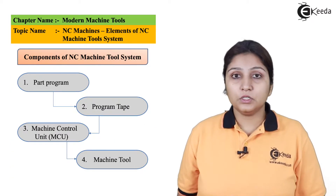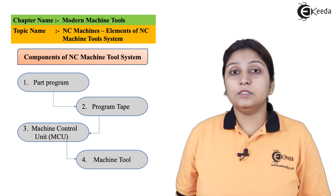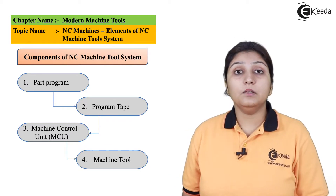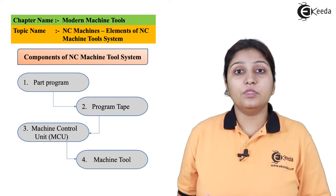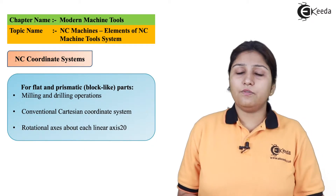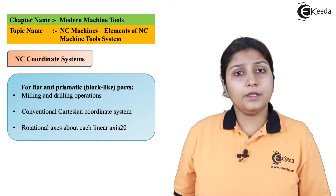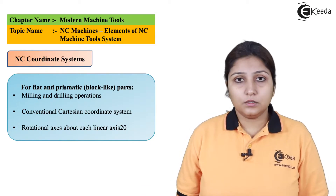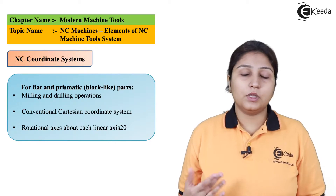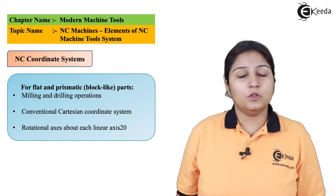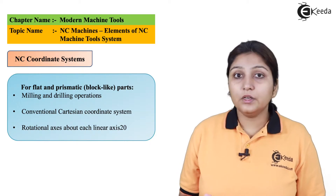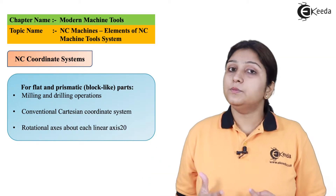The components of an NC machine tool include a part program, a control unit, and the machine tool itself which operates based on the programming. In the picture you can see a flat or prismatic block that can rotate on various axes, carry out linear feed, and also rotational feed. The Cartesian coordinates for both linear and rotational mechanisms are specified.